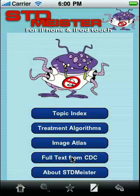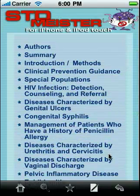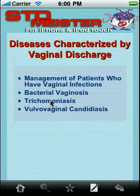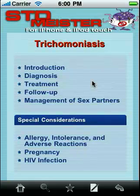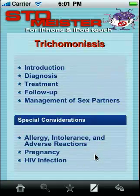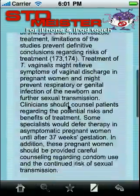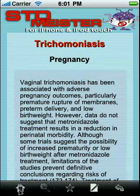Next on the list is the full text from the Center for Disease Control's STD treatment guidelines — published in 2006, updated in 2007, with another one coming out in 2010. This has the original verbatim text from those guidelines. Let's say you have a patient with trichomoniasis — you can choose your area. Notice the background of the text taken directly from the CDC guidelines has a slightly different colored background to distinguish it from the custom-created content for STD Meister. The step-by-step treatment algorithms are a bit faster if you just want to get the answer quickly.